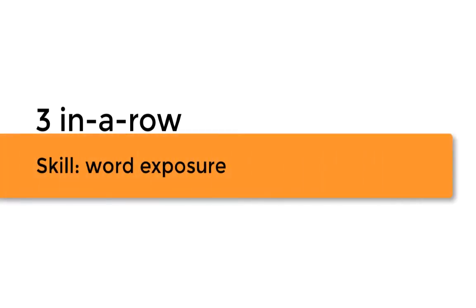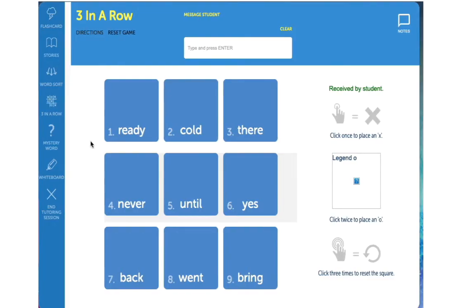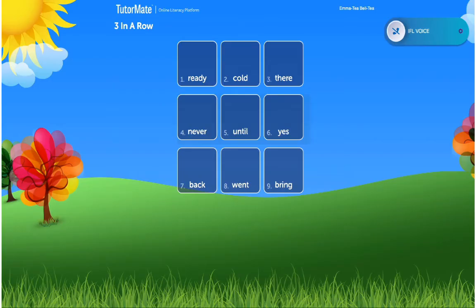Three in a row is a favorite activity for many students. This additional exposure to words will help encourage fluent reading and word identification. When you're ready to begin, determine who will be a cross and who will be a nought. Notice each box has a word. Your pupil can see the same words as you. Taking turns, you and your student will try to be the first to get three crosses or noughts in a row, up, down, across or diagonally. When you place a cross or a nought in the box, your student will see the same thing on their screen.